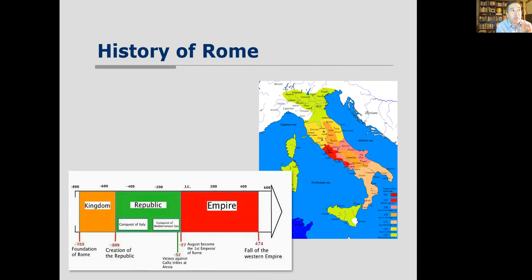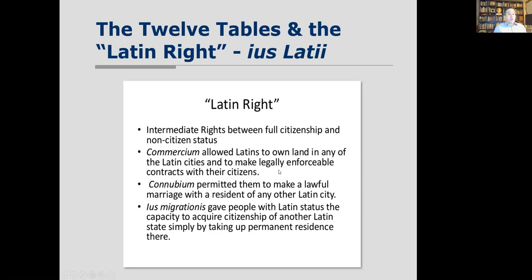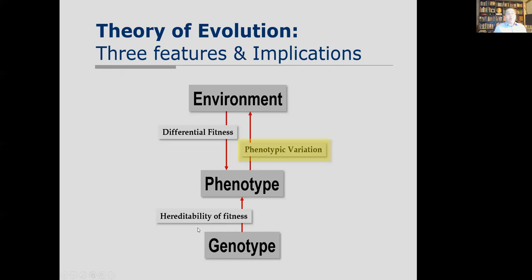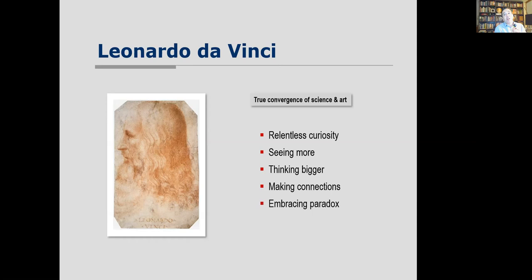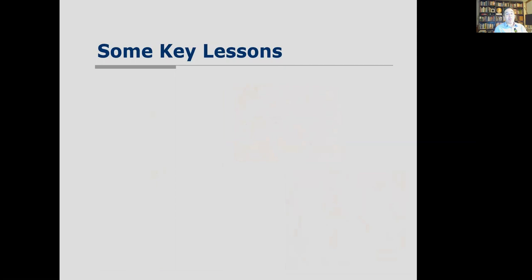This learning process is very important for innovation and we'll discuss it in the second half of the course. Roman law facilitated this open innovation framework — allowing for differential fitness, phenotypic variation, and heritability of fitness, enabling new ideas to come in. We also talked about Leonardo da Vinci and the convergence of science and art, and his personal characteristics that led to inventive thinking — always curious, seeing more, thinking bigger, making connections between fields, embracing paradox, and acting boldly. The Mona Lisa itself is a combination of science and art.